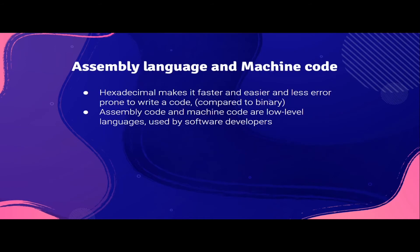Next, assembly language and machine code. Assembly language and machine code are low-level languages used by software developers. Instead of binary, they use hexadecimal because it's faster, easier, and less error-prone to write code.